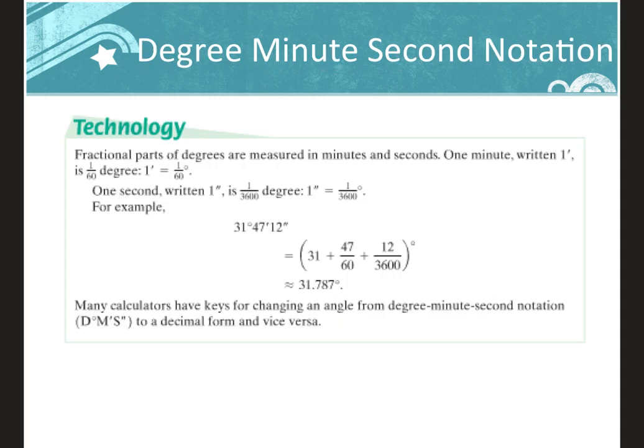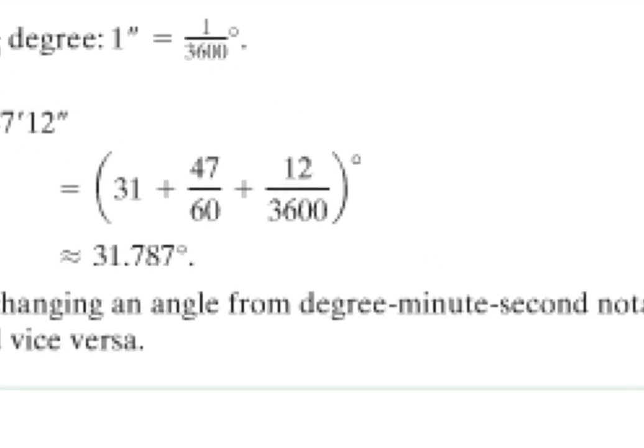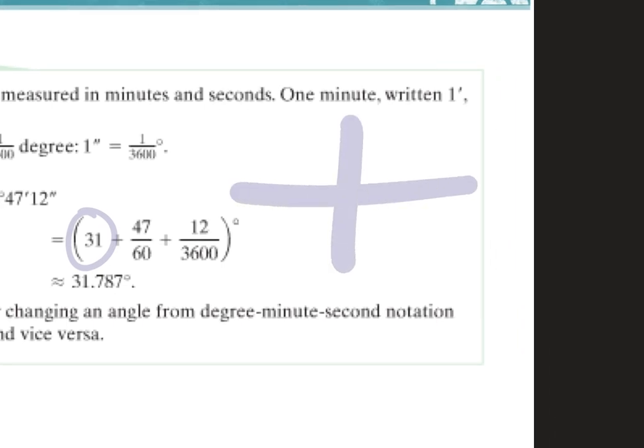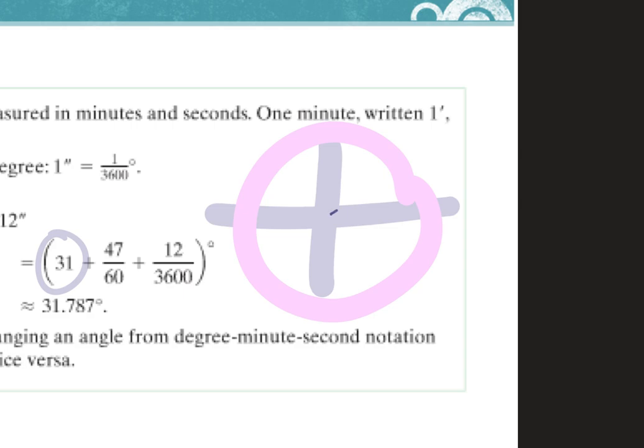Now let's talk about degree-minute-second notation. Take out your calculators. Degree-minute-second notation is a way to get a more precise measure of an angle. Think of it like a clock — you have hours, then the minute tick marks on the clock, and then even smaller seconds in between those minutes.